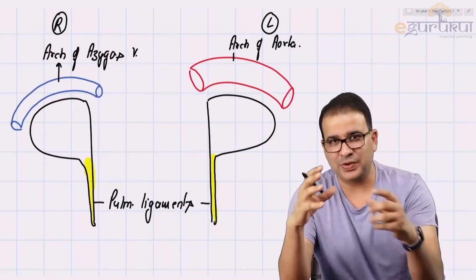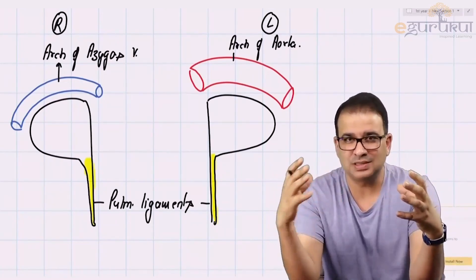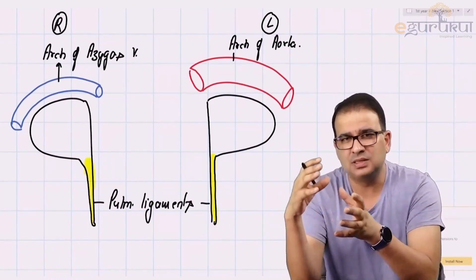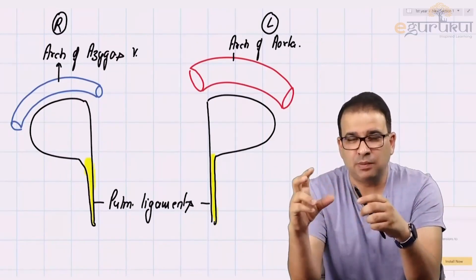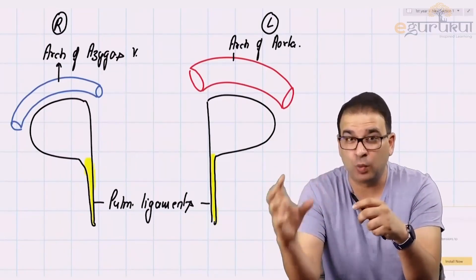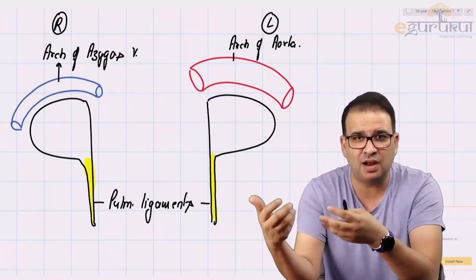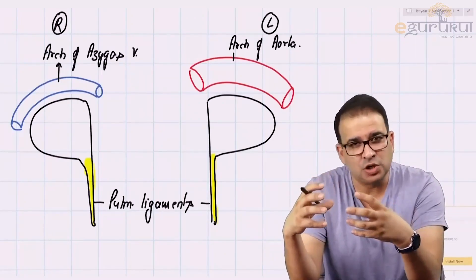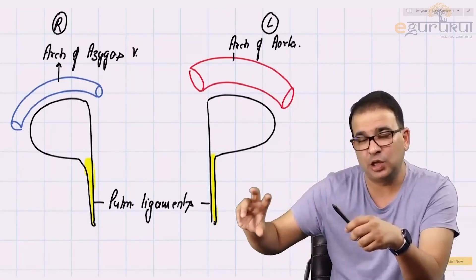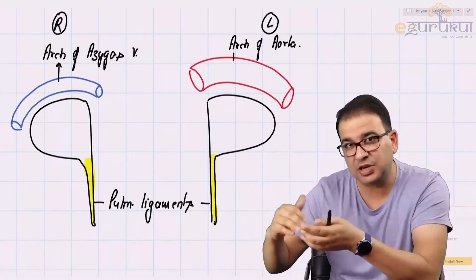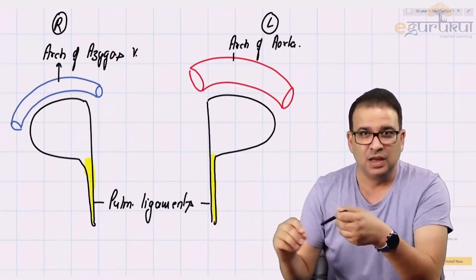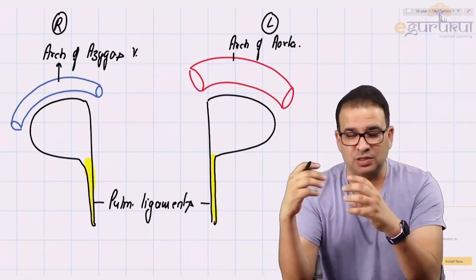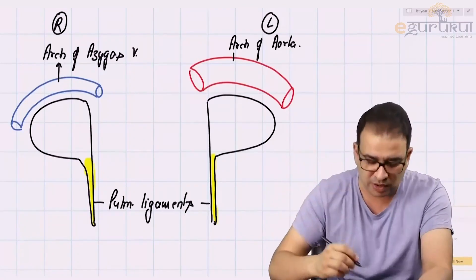Trachea divides into the two principal bronchi — the right and the left. The right principal bronchus is shorter, wider, and more vertical, which is why the chances of infection in the right lung are more common. Because the right bronchus is shorter, you will not see the right bronchus entering the lung directly. You will see the next division — the next generation of the right bronchus — entering the root of the lung, called the eparterial bronchus and hyparterial bronchus because it is present above and below the pulmonary artery.